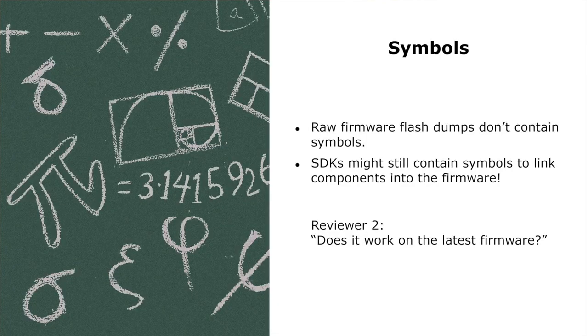Usually when reverse engineering firmware you won't get any symbols. You have a flash dump — raw firmware without any packaging format — so there is no metadata that could contain symbols. I thought for a long time there was no way to find symbols at all. But then something happened: we submitted the Bluetooth paper and reviewer #2 asked whether it worked on the latest Bluetooth firmware. So I bought the latest dev kit, and two or three days after it arrived I realized — the dev kit had symbols, used to link the firmware together, containing a full list of symbols, not just the few needed for linking. This was super interesting, and it's probably the first time I've said thank you to reviewer number two — it was worth a paper revision.